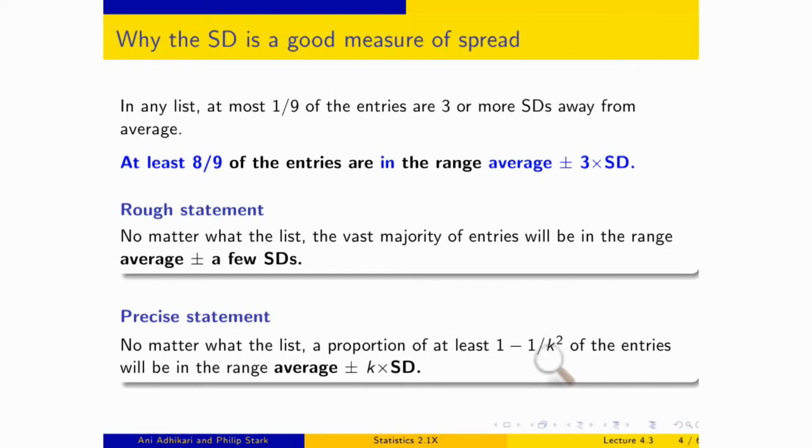This is, of course, most interesting for large-ish k. I say large-ish because k doesn't have to be very large. Even when k is equal to just three, going three SDs on either side helps you pick up a big proportion of the data. This inequality is, in my view, one of the two main reasons the SD is used most commonly as a measure of spread. The second one is about to turn up in stat 2.2x, if you stay with me.